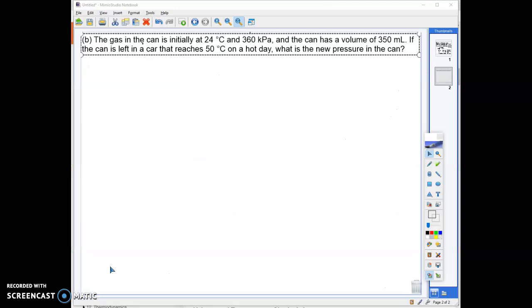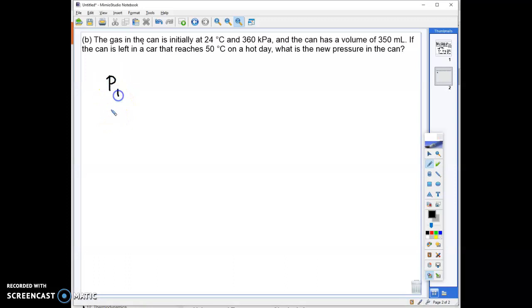So here I have a problem that involves the use of Gay-Lussac law where I have an initial temperature and pressure and then a different temperature, and I'm asked what is the new pressure. You'll see the volume is listed, but that's extra information. We don't need that at all to solve this problem because it doesn't tell us that there's a change in volume. It just says the can has a volume of 350 milliliters. So when I get ready to set up this problem, I like to write all of my variables down first so I can figure out what it is that I have and what it is that I'm looking for.